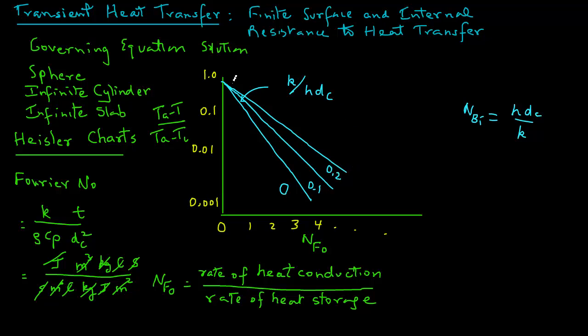What we have on this Heisler chart is a Fourier number in the x-axis that contains the value for time, and on the y-axis, we have the temperature ratio. That should tell you that we can use this chart to either find the time for heating or cooling to reach a certain center temperature, or at any given time, we can estimate what will be the center temperature.